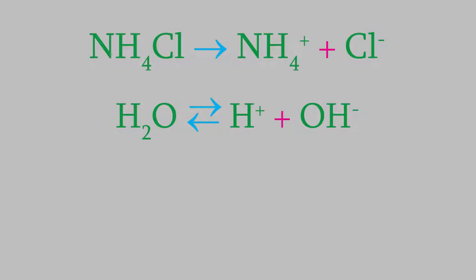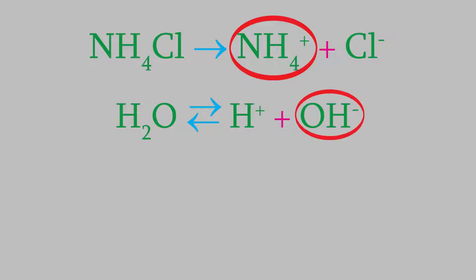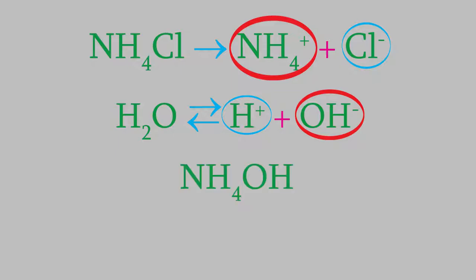Those ions will be attracted to the hydrogen and hydroxide ions that are already there in the water. For example, the ammonium has a positive charge, so it'll be attracted to the negative hydroxide ions. Meanwhile, the chloride has a negative charge, so it'll be attracted to the hydrogen ions. When that happens, we get ammonium hydroxide and hydrochloric acid. So, when we dissolve this salt in water, we end up creating a small amount of acid and base.